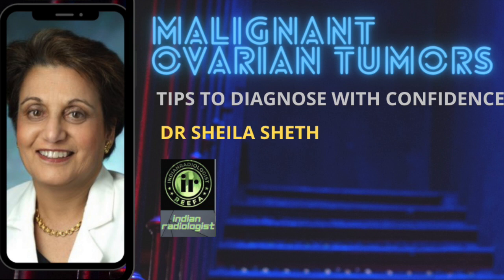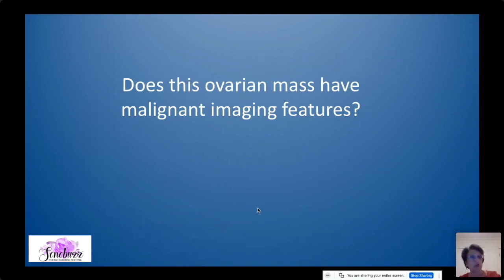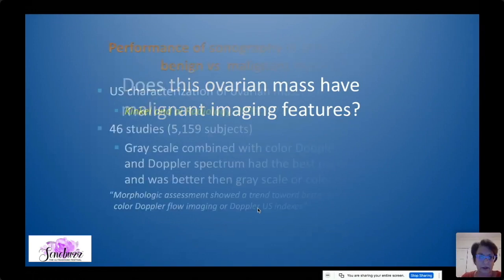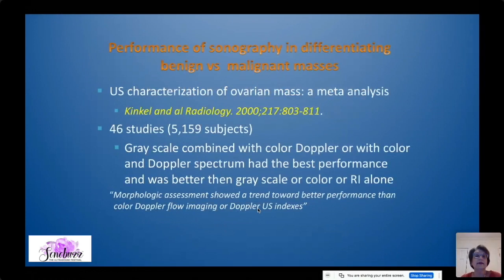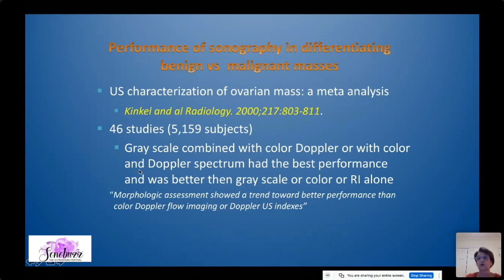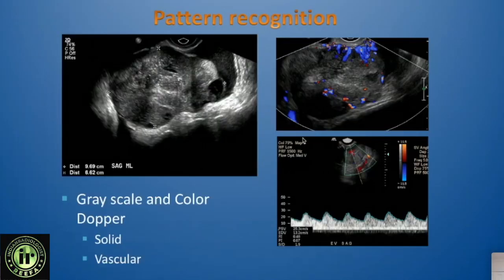The next important question is whether we can recognize ovarian masses and determine if they are likely malignant. The performance of sonography in the hands of expert sonographers is really excellent. What works very well is combining grayscale with color Doppler, or grayscale with color and Doppler spectral analysis — that is really the best way to characterize ovarian lesions.